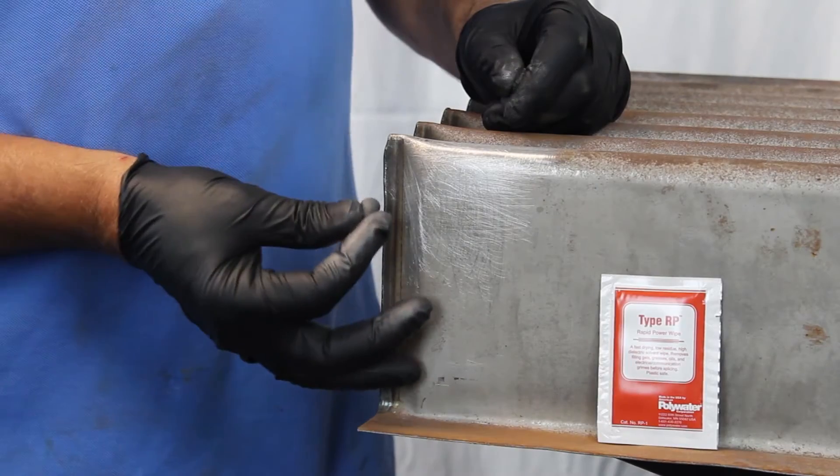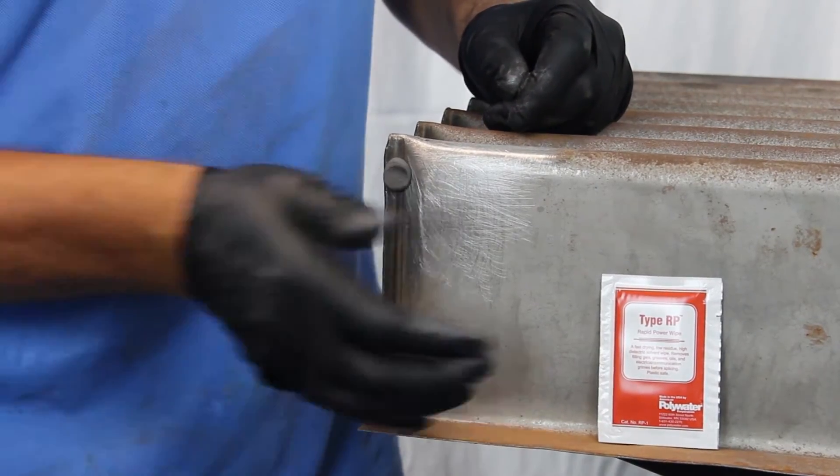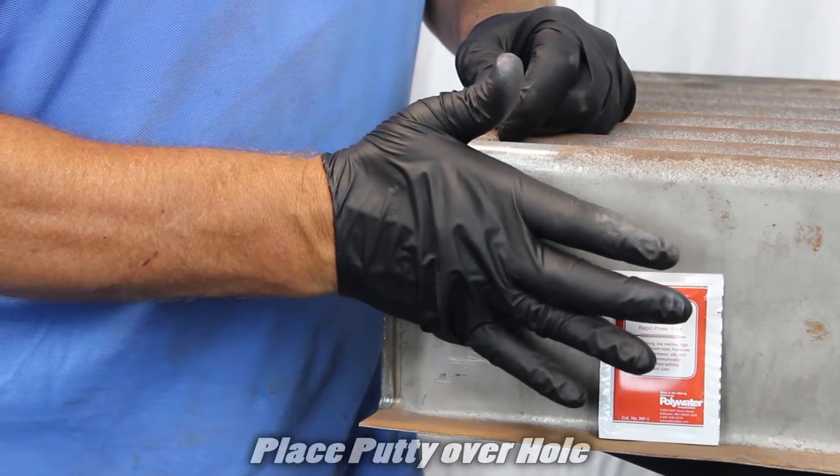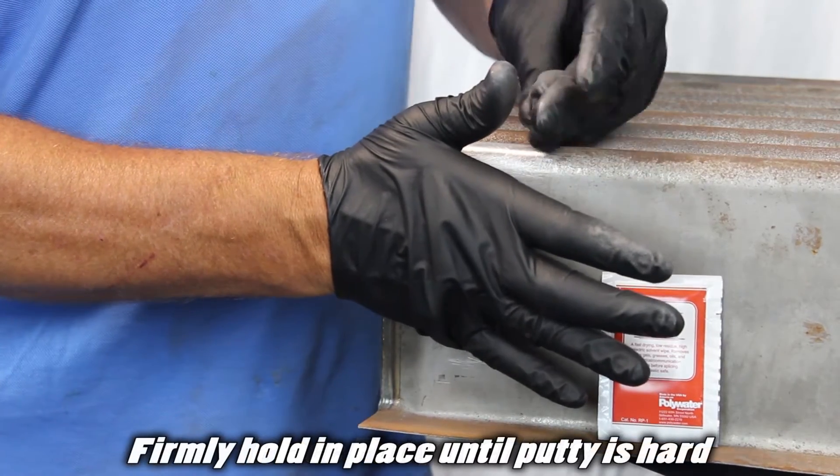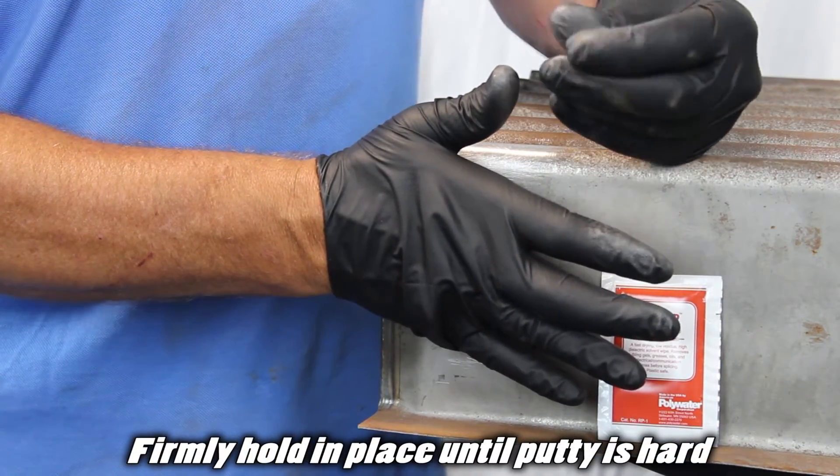Save some putty so you can tell when the applied putty has hardened. Place the putty over the hole and firmly hold it in place with your thumb or palm until the putty is hard.